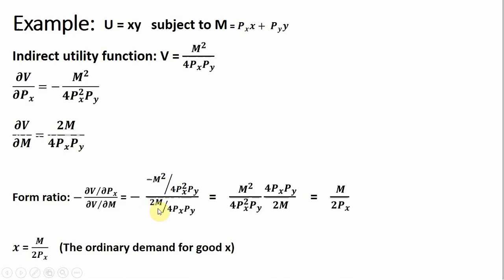Forming the ratio of those partial derivatives — taking minus the partial derivative of the indirect utility function with respect to price of x gives us this result. And if I divide it by the partial derivative of the indirect utility function with respect to income, I get this. The two minus signs here will cancel. Then I'll take what's in the denominator and multiply everything through by its reciprocal. So we have m squared divided by 4 times the price of good x squared times p-y, and that is all going to be multiplied by the reciprocal of what's below, which gives us this expression.